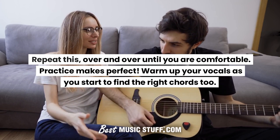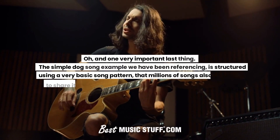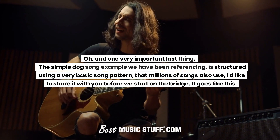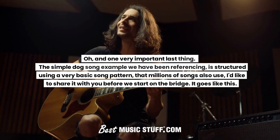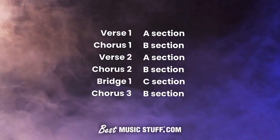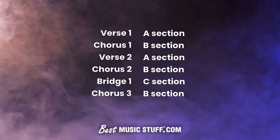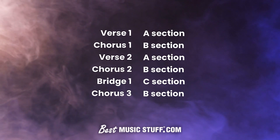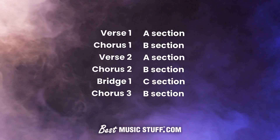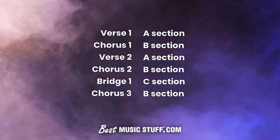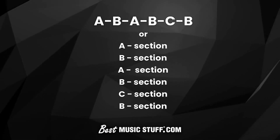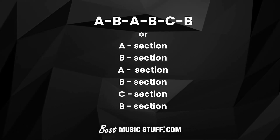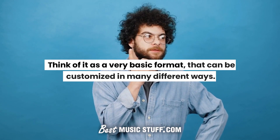Warm up your vocals as you start to find the right chords too. One very important last thing: the simple dog song example we have been referencing is structured using a very basic song pattern that millions of songs also use. It goes like this — verse one (A section), chorus one (B section), verse two (A section), chorus two (B section), bridge one (C section), and finally chorus three (B section). This simple song structure is referred to as A, B, A, B, C, B. Think of it as a very basic format that can be customized in many different ways.